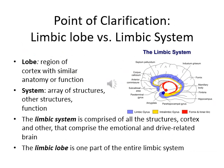It is important to note that the limbic lobe is different from the limbic system. The limbic lobe includes only the cingulate gyrus and parahippocampal gyrus. The limbic system includes a whole collection of structures — cortex and white matter — that comprise emotion and drive-related circuitry. The limbic lobe is only one part of the limbic system.